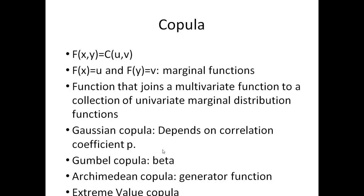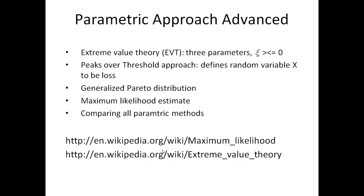There are different types of copula, including the Gaussian copula, Gumbel, Archimedean, and extreme value copula — we will take a separate session on these. In FRM market risk, we study a generalized form of the extreme value theorem with a third parameter useful for calculating the fatness of tails. We also study the peaks over threshold approach, which defines a random variable x as loss. Additionally, we cover the generalized Pareto distribution and maximum likelihood estimation, with Wikipedia being a good starting point.